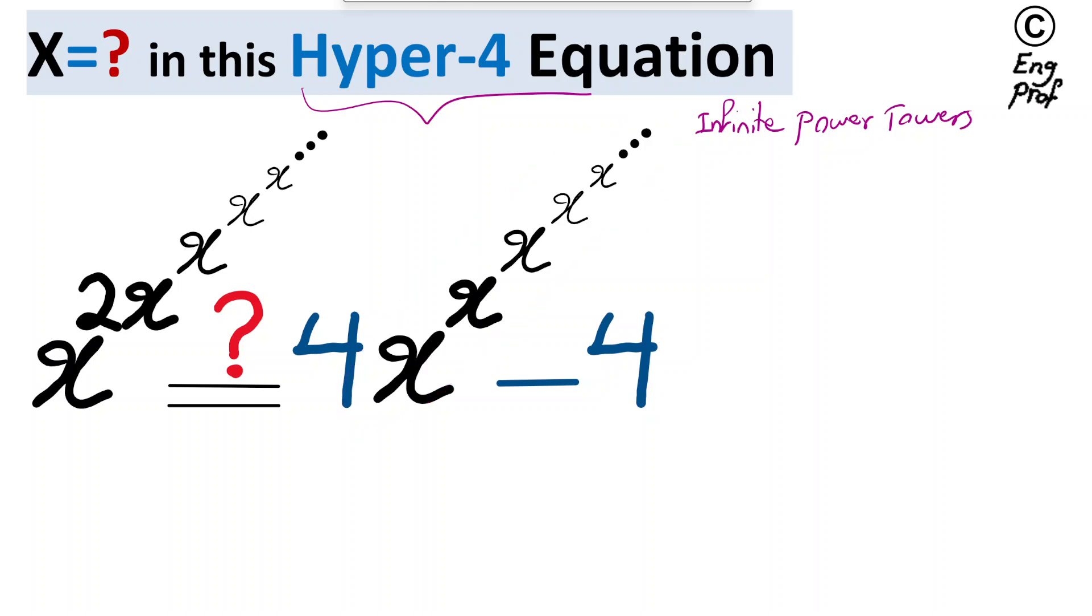And they are also referred to as tetration. Another name for this thing is super exponentiation. And of course the infinite repeated exponentiation is also another name.